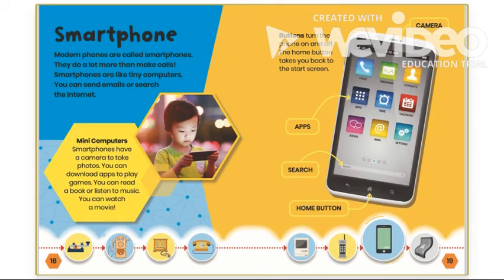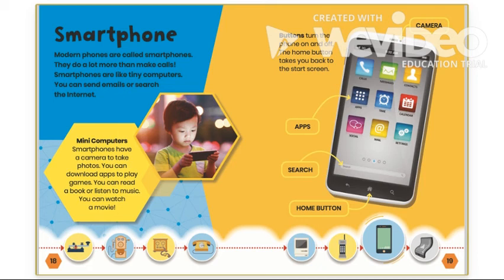Smartphone: Modern phones are called smartphones. They do a lot more than make calls — smartphones are like tiny computers. You can send emails or search the internet. Many of you have cell phones. Smartphones have a camera to take photos. You can download apps to play games, read a book, listen to music, or watch a movie. The different parts of the smartphone include the camera, apps, the search bar, and the home button. Buttons turn the phone on and off. The home button takes you back to the start screen.